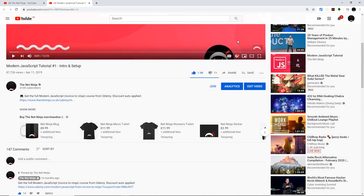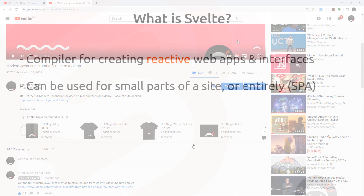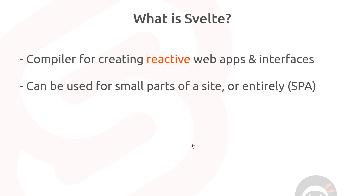So now that's out of the way, let's talk a little bit about Svelte. What is Svelte? Well, Svelte is a compiler for creating reactive web apps and interfaces. We can use Svelte to control just certain parts or sections of a site, or we can use it to create an entire website, which is typically called a single page application, or SPA for short. I've highlighted the word 'reactive' because by reactive I mean that if we have data or state in our web app that we show to the user in a browser, we want to react to changes in that data by reflecting those changes in the browser instantly.